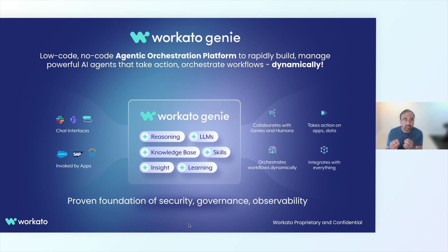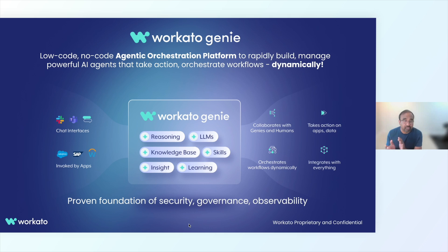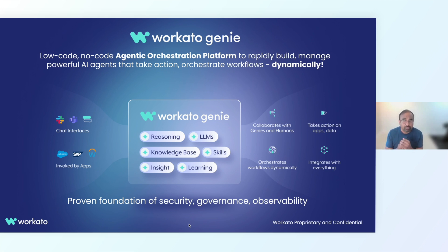Based on that context, it goes and takes action on the applications that are there. As part of contextualizing, if it realizes this is a workflow that needs to be orchestrated, it reasons and comes back with a plan — these are the three or four steps we need to do — then goes ahead and dynamically executes that workflow. Apart from the chat interface, you can trigger it from applications, listening to events in your business application stack, and Genie can come in and start orchestrating that process.